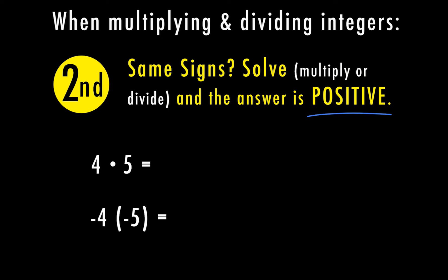Let's look at an example with the same sign when we're multiplying. Here I have 4 times 5 — they're both positive, they have the same sign, so 4 times 5 is 20 and my answer is positive. Same thing here: negative 4 times negative 5. 4 times 5 is 20, and they have the same sign, so my answer is positive.